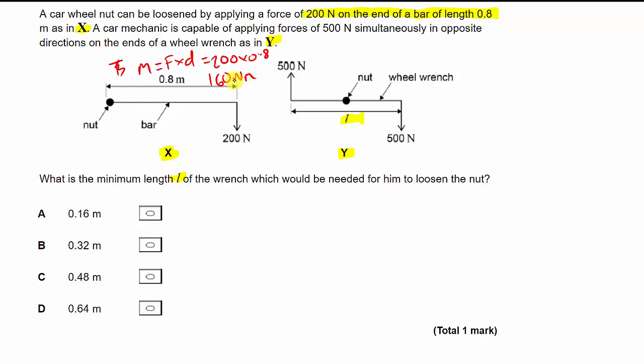Basically, we need to equal 160 Newton meters with the torque produced by this. Well, if we remember from our handy definition of a couple, you don't need to do 500 times half of L plus 500 times half of L. You can just do 500 times L needs to produce 160 Newton meters of torque. And from here, it's just a simple rearrangement. 160 divided by 500 gives me 0.32 meters. So that is the minimum length required to open this nut.